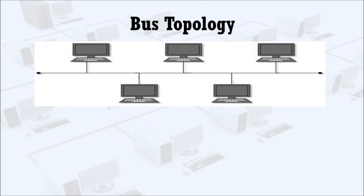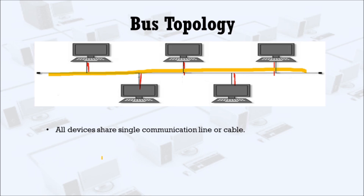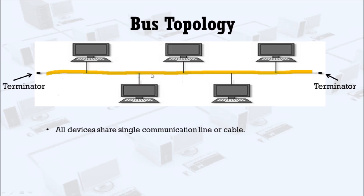Here is an example of bus topology. These are nodes, and each node is connected to a single cable. Both ends of this shared channel — what we call the cable — have a terminator. The data is sent in one direction, and as soon as it reaches the extreme ends, the terminator removes the data from this channel.